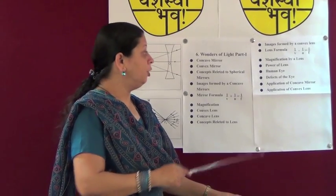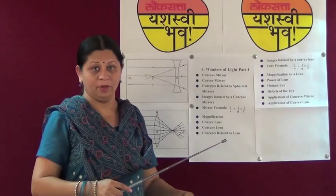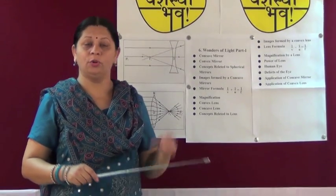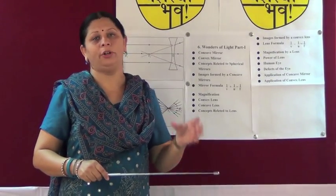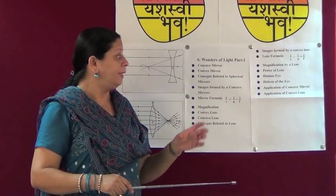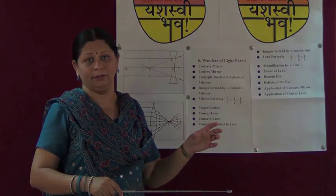Now, what is the power of a lens? Power of a lens is the ability of the lens to converge or diverge rays with respect to its focal length.